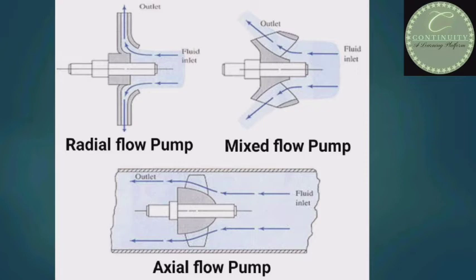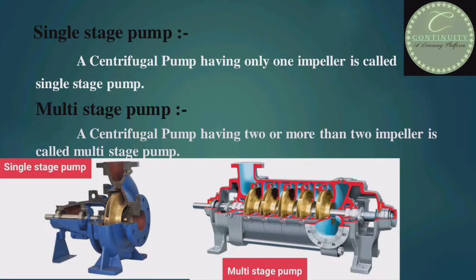This diagram clearly shows the flow patterns of the radial flow pump, mixed flow pump, and axial flow pump. Next, the single stage and multi-stage pump. A centrifugal pump having only one impeller is called a single stage pump. A centrifugal pump having two or more impellers is called a multi-stage pump, as you can see in the picture where there are more than two impellers.